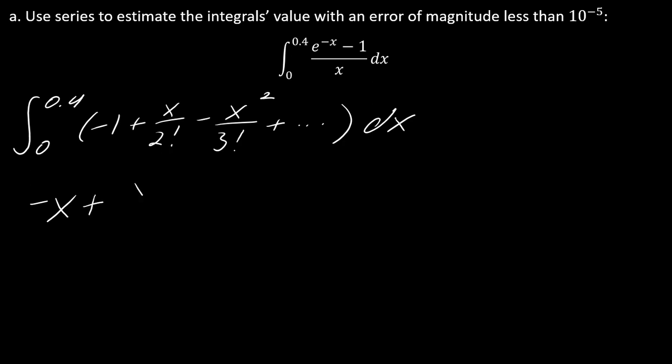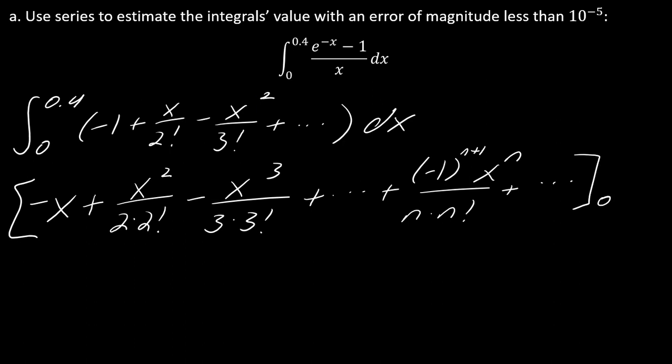I can see what the pattern is. Now we're going to integrate. This becomes negative x plus x squared over 2 times 2 factorial minus x cubed over 3 times 3 factorial. I already see the pattern here. This will be x to the n over n times n factorial, so on and so forth. There should be a negative 1 to the n plus 1, and then x to the n.